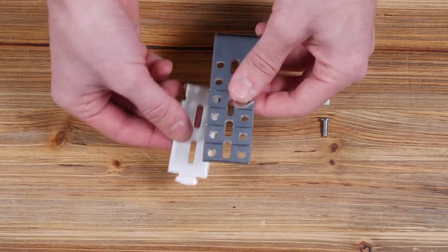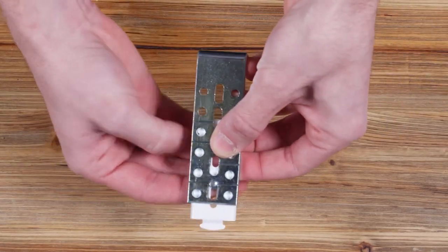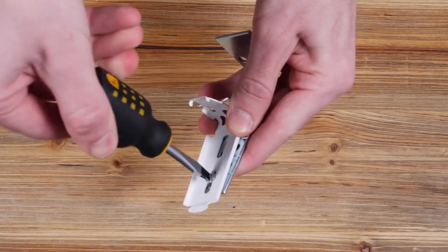If you're using extension brackets, the first step is to combine each mounting bracket with an extension bracket. Use a flathead screwdriver to tighten the screw and nut together.